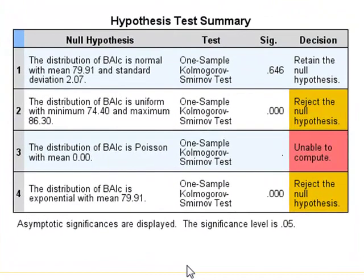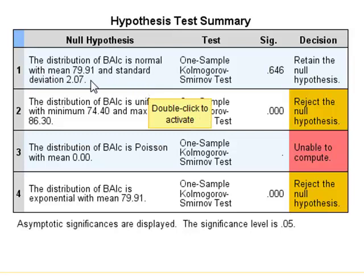We see the summary results of the four analyses. For the normal distribution test, the analysis has identified that the sample has a mean value of 79.91 and a standard deviation of 2.07, and the test says that we should retain the null hypothesis with a p-value of 0.646. There is no evidence that the data was derived from anything other than a normal distribution.